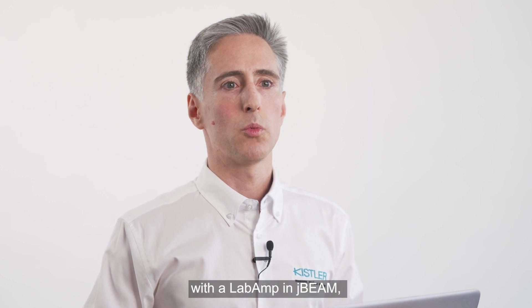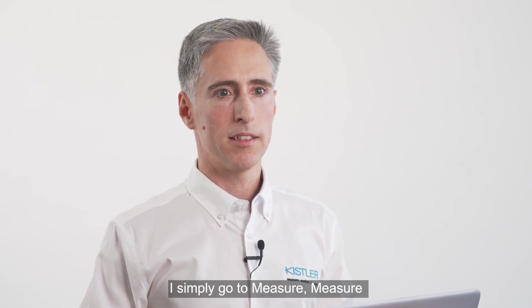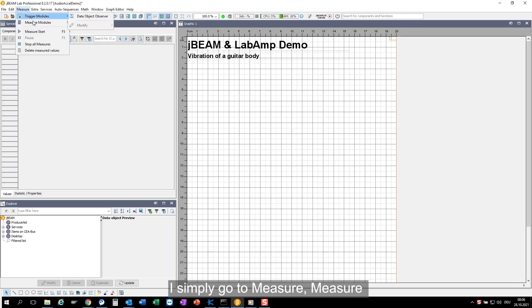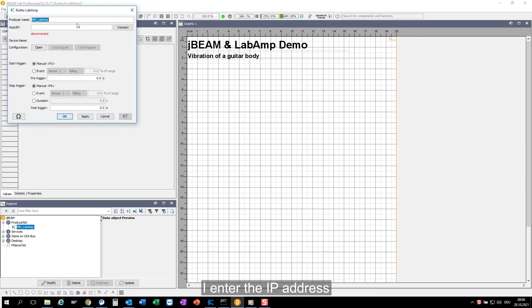If you want to measure with a lab amp in JBeam, I simply go to measure, measure modules and select Kistler lab amp. I enter the IP address of my device and connect.